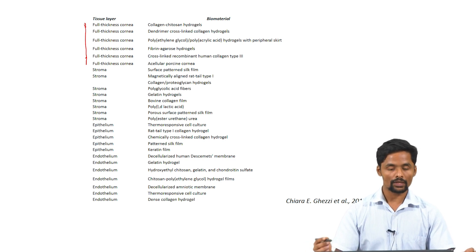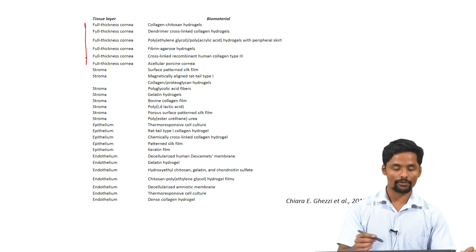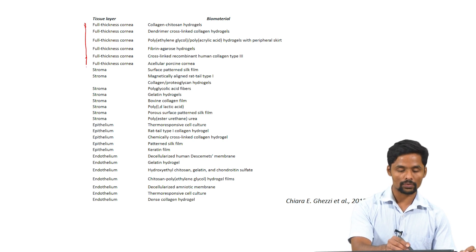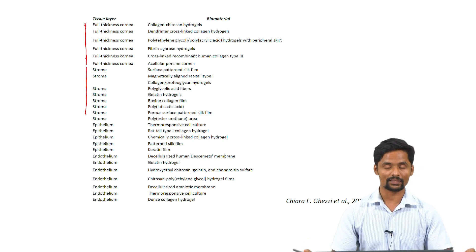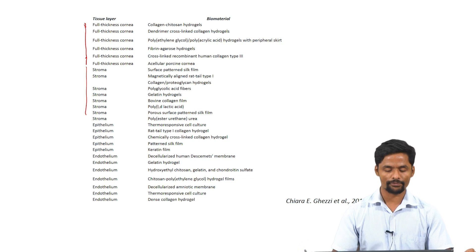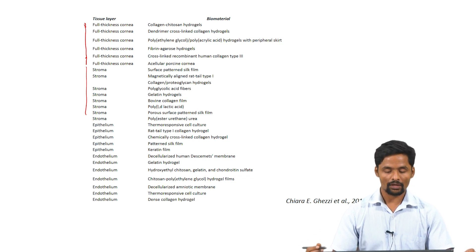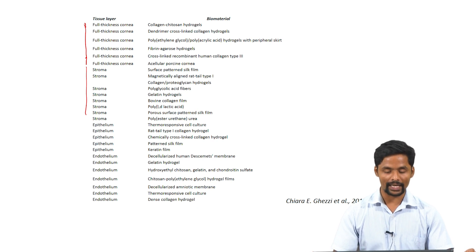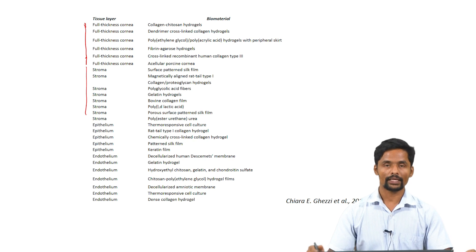The stromal layer of cornea has also been tried to reconstruct. Many types of polymers have been used for this purpose, including keratin, polylactic acid, gelatin, and polyglycolic acid. We will talk about all these polymers in the coming slides.